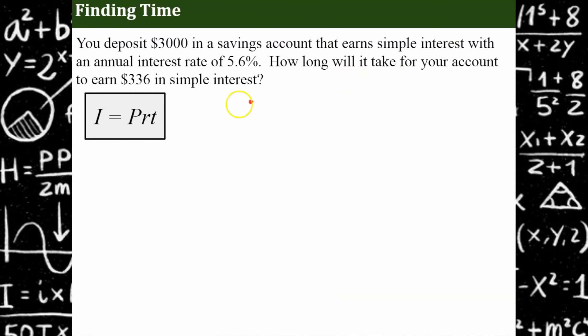All right, let's try one where we don't know the time. So we deposit $3,000 in the savings account. It earns simple interest of 5.6%. And we want to know how long it's going to take us to have $336 in simple interest. I'm going to ask you to pause and try this one on your own. Come back and hit play when you're ready.